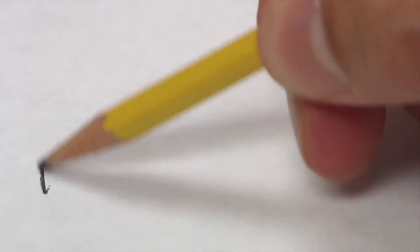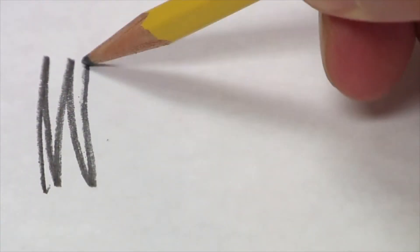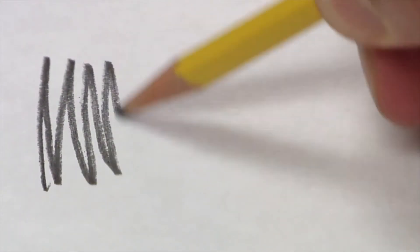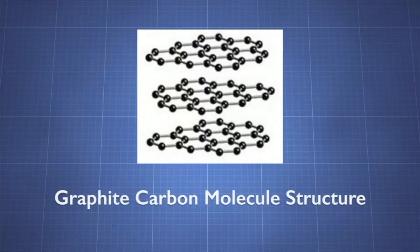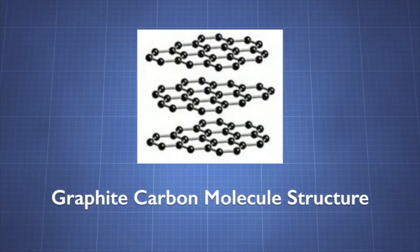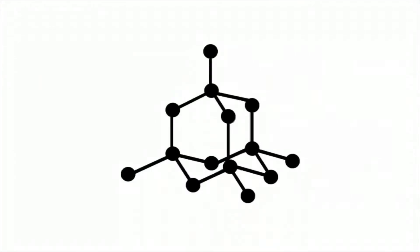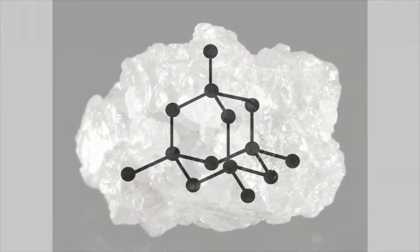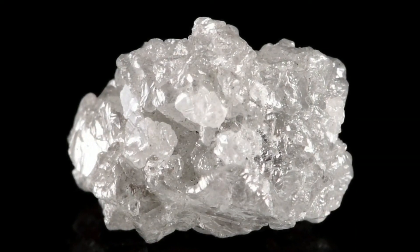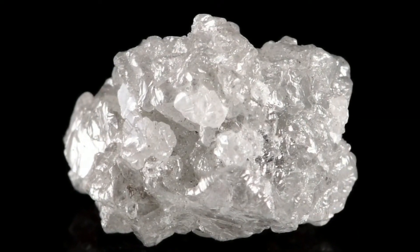We know from using graphite pencils that graphite is dark and very soft. These properties are a result of graphite's carbon molecules' sheet-like structure that is not well connected. The carbon molecules of diamond are organized in an interlocking arrangement creating an incredibly strong bond. This structure makes diamond a very hard and often transparent mineral.